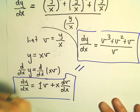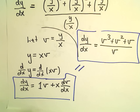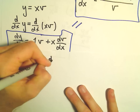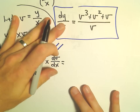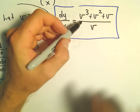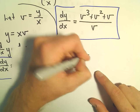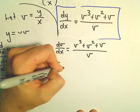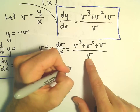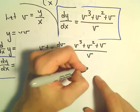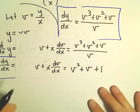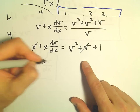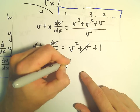Now we have two equations that both involve dy/dx, so we set them equal to each other and we'll have a separable differential equation. On one side we've got v plus x dv/dx. On the other side we have v cubed plus v squared plus v, all over v. Simplifying: v cubed over v is v squared, v squared over v is v, and v over v is 1. Subtracting v from both sides, we get x times dv/dx equals v squared plus 1.